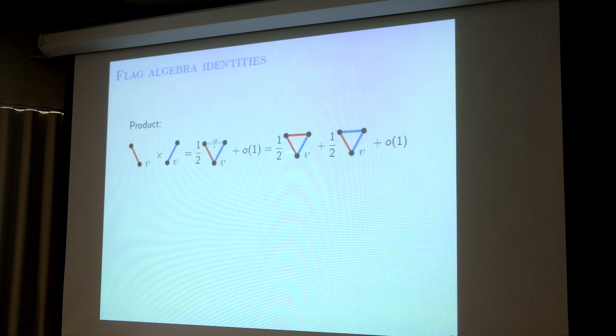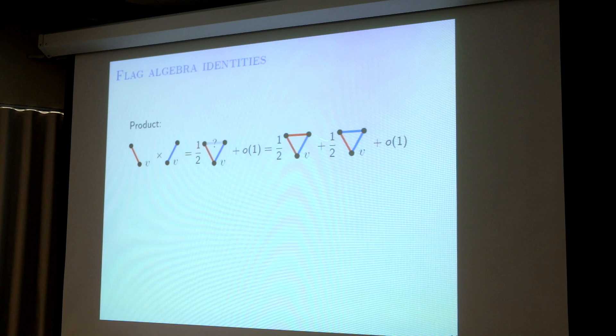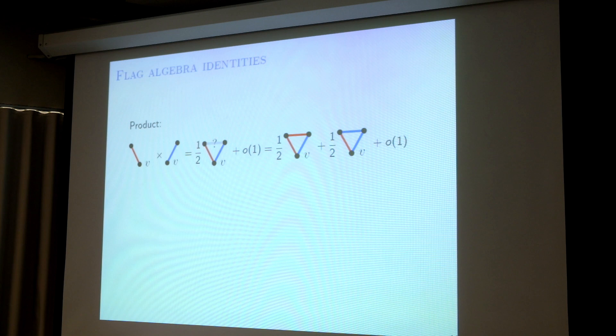Whenever you see something like this, you just think of it as a density in some large graph G. This coefficient is just to make the equality hold. If you don't care about the coefficients, it makes more sense: it says I have a red edge and a blue edge, they share a vertex, so if I look at their product it should give you this structure.